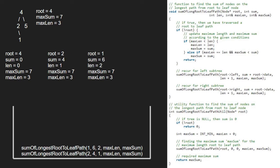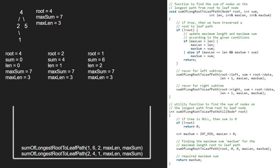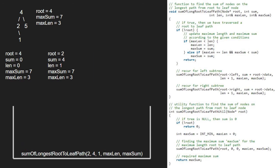Now we pass the right child of 1, which is null. As root is null, the if condition gets satisfied. Now as max_len is not less than len, we go to the else-if part and check if max_len is equal to len and max_sum is less than sum. The first part is true but max_sum is not less than sum, so the else-if part is not satisfied and we return to the previous call. Execution for root 1 is over, and execution for root 2 is also over.